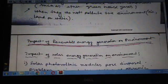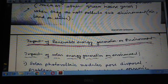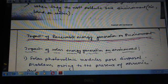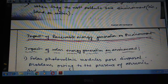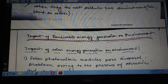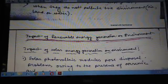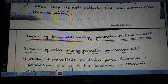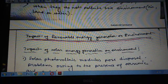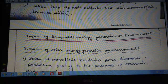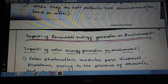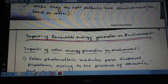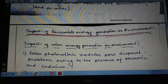Now the impact of renewable energy generation on environment. Impact of solar energy generation: Solar photovoltaic modules pose disposal problems owing to the presence of arsenic and cadmium. The total system comprising solar power generation generates several pollutants. Solar reflections cause hazards for human eyes.